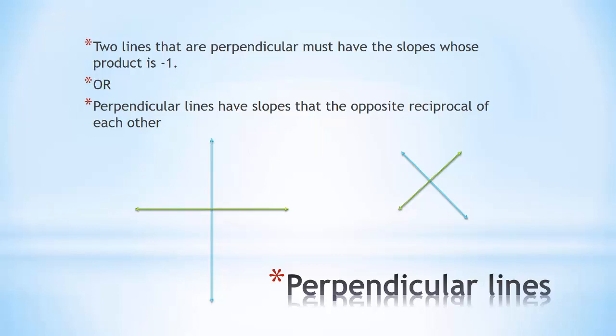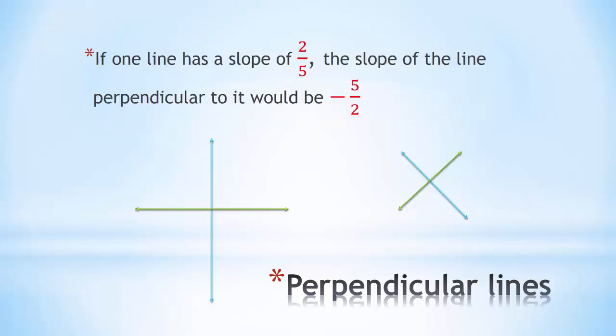Let's look at an example. If I have one line and its slope is 2/5, the slope of the line perpendicular to it would be -5/2. In terms of opposite reciprocal, the opposite comes from the fact that the first one started with a positive and the second one started with a negative, and the reciprocal is that I flip 2/5 to be 5/2. But if I was to multiply 2/5 times -5/2, I would come up with -1.